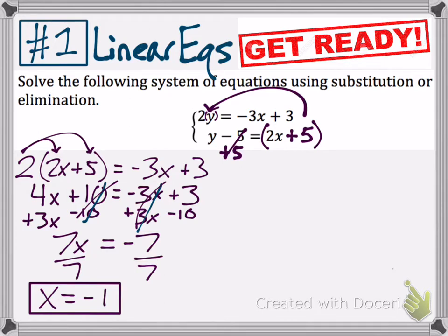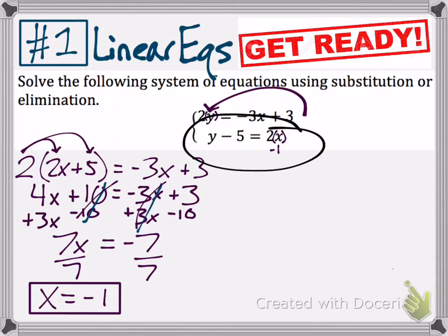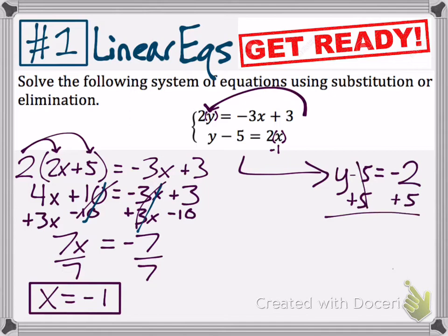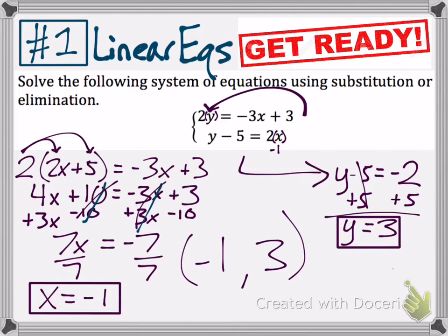You are not done though — you still need the y variable, which means you take your negative 1 and plug it back into either equation. I am choosing the second equation because it looks easier. When you make x equal to negative 1, the equation says y minus 5 equals negative 2. Adding 5 to both sides gives y equals 3, meaning the answer is negative 1 comma 3.